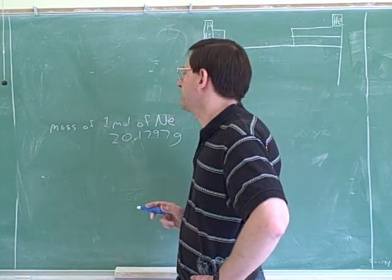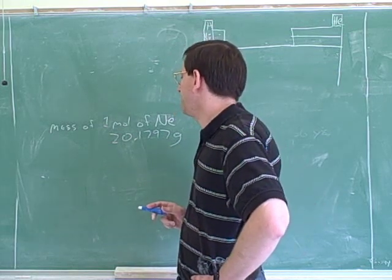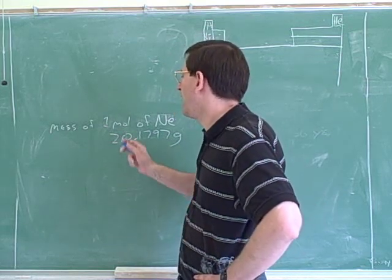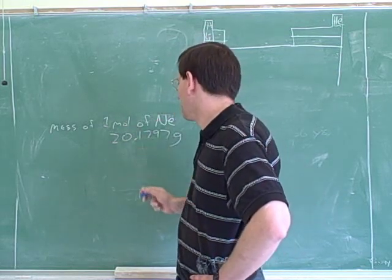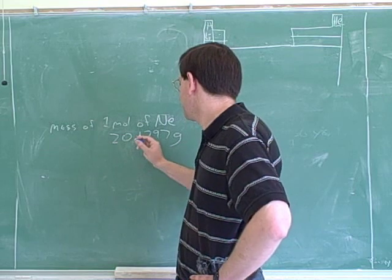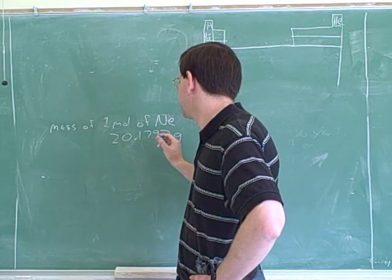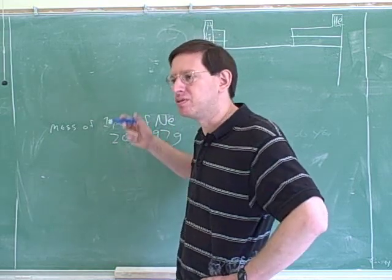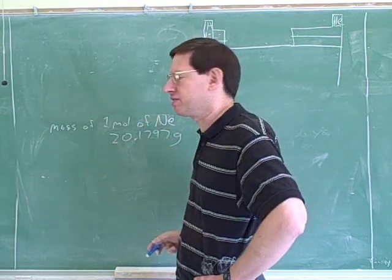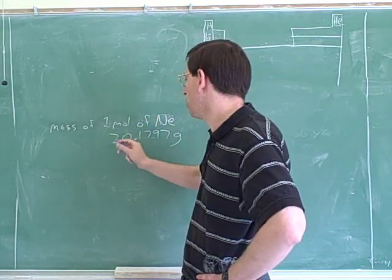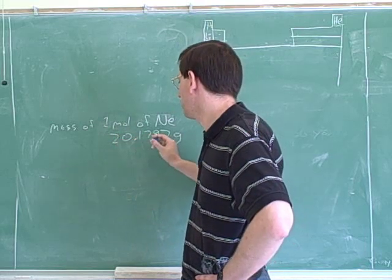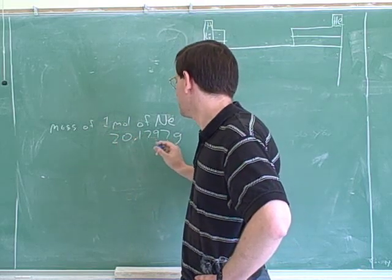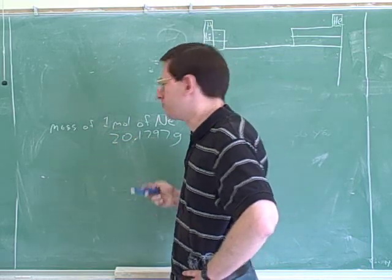Remember that the mass of one atom of neon would be 20.1797 AMUs, but we don't use those as often. So the mass of one mole would be 20.1797 grams.